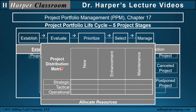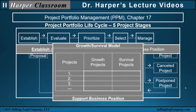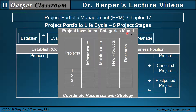The project distribution matrix considers the strategic, tactical, and operational focus of projects and places the projects in a cell based on whether they are new, enhancement, or maintenance type of project to allocate resources that enhance a particular business strategy. The growth survival model considers projects as either growth to enhance the business position or survival to sustain a business position, where the mix of projects will support the business position now and for the future. The project investment categories model coordinates resources within a business strategy by identifying projects as infrastructure, maintenance, new products, or research, with a focus on the effective utilization of the resources.